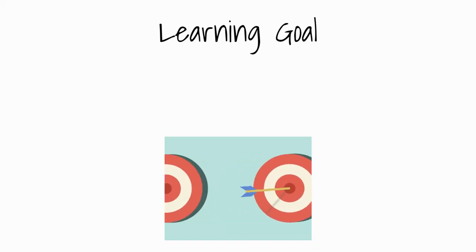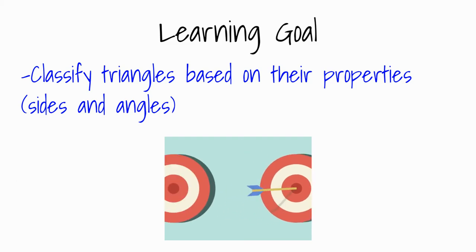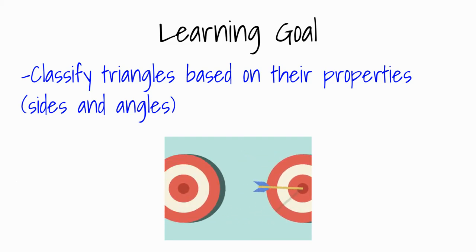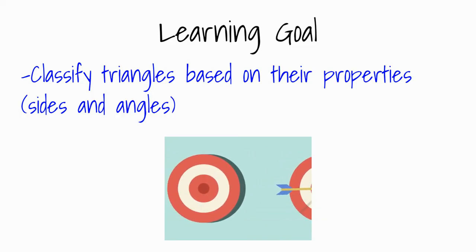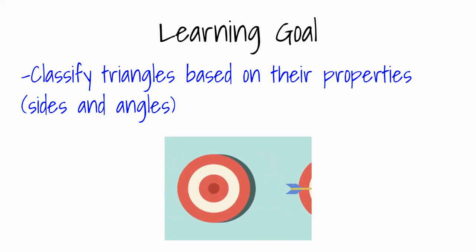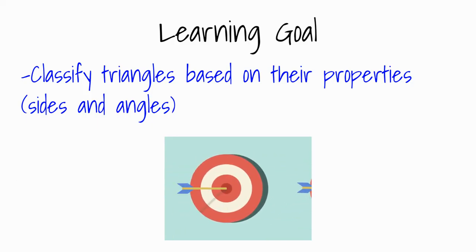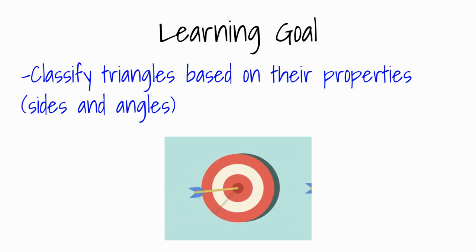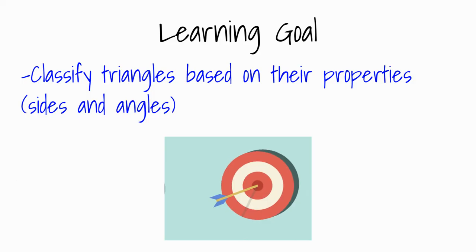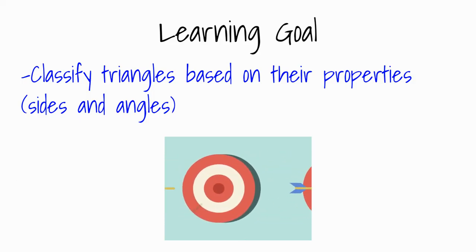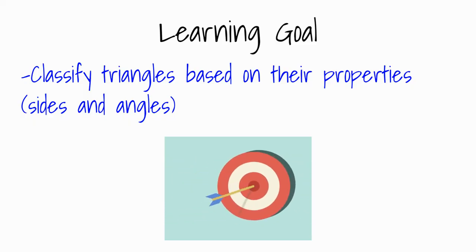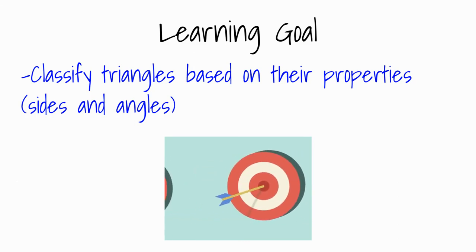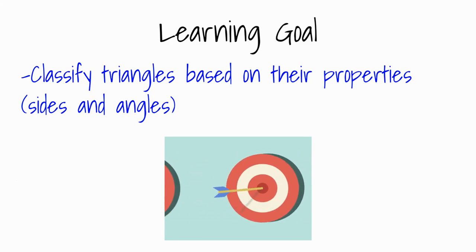Let's come back to our learning goal. At the beginning of the video I said you'd classify triangles based on their properties — by their sides and angles. Check in with yourself: how did you do on the practice questions? If you didn't do well, be patient — this is brand new. If you're not getting it right, that means you need to study. You can learn these words, and once you know what they mean, you'll be fine. I have flashcards and other resources to help you.